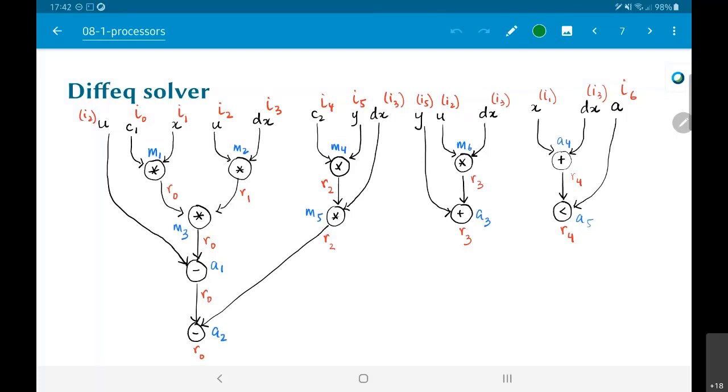Moving ahead with this, we have given all these names, M1 to M6 and A1 to A5. Now, what do we do with this?